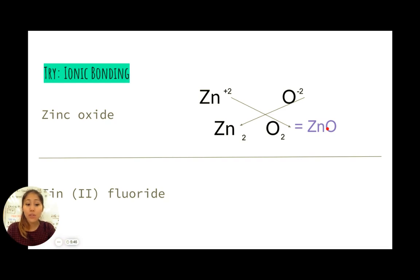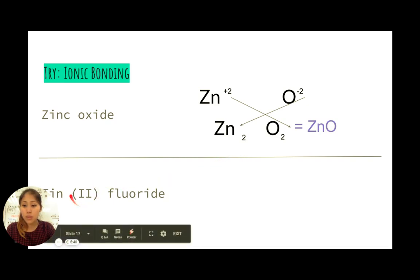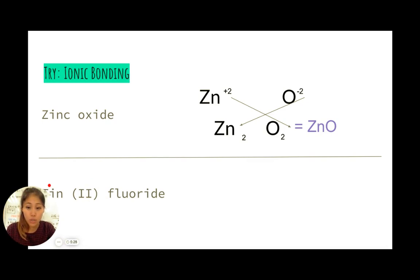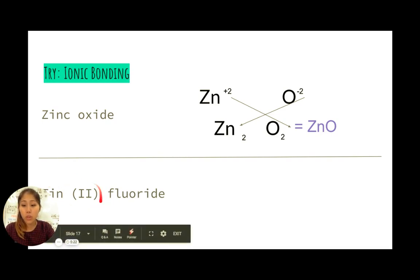Tin(II) fluoride. Now this is an interesting way of naming ionic bonds. Whenever you see a parenthesis with a roman numeral inside it, you know that whatever is in front of this, which in this case is tin, this metal is a transition metal, and it's a variable transition metal.